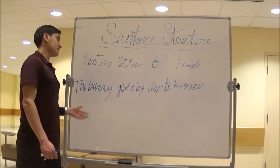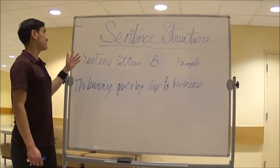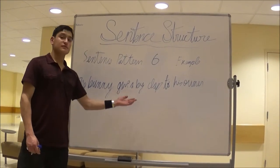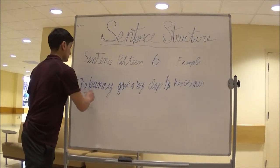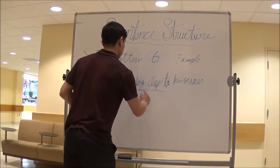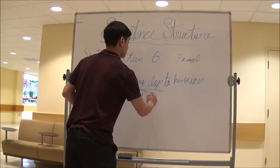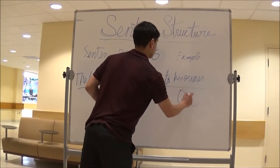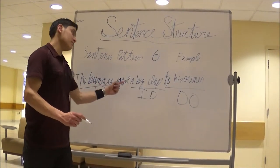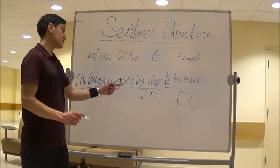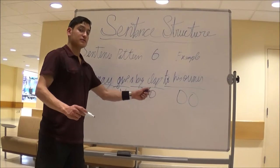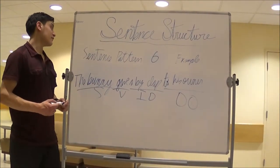Sentence pattern 6 example with a transitive verb and indirect object. The bunny gave a big clap to his owner. The bunny is the subject, a big clap is the indirect object, and to his owner is the direct object. To his owner is receiving a big clap. The indirect object will always be between the verb and the direct object — that makes this pattern 6.